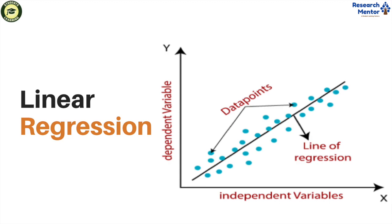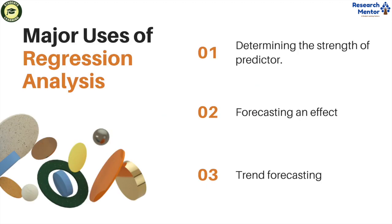Changes in independent variables on the y-axis relate to changes in the explanatory variable on the x-axis line. There are major uses of regression analysis: determining the strength of predictor, forecasting an effect, and trend forecasting.